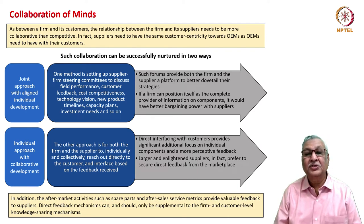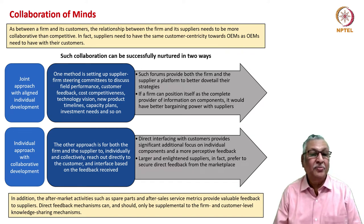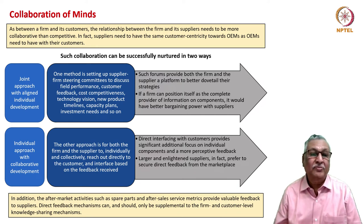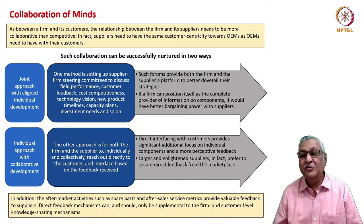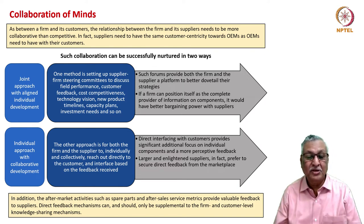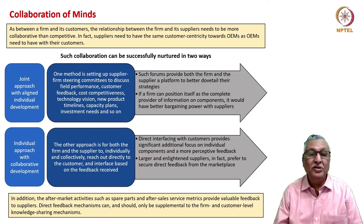This collaboration can be successfully nurtured in two ways. First, a joint approach with aligned individual development. Second, an individual approach with collaborative development — the suppliers and the firm establish steering committees to discuss field performance, customer feedback, cost competitiveness, technology vision, new product plans, capacity plans and benchmarks, so that the firm and the supplier have a platform to better dovetail their strategies. In the individual approach, development is for both the firm and the supplier to individually and collectively reach out to the customer, based on feedback received, pooling data collectively.